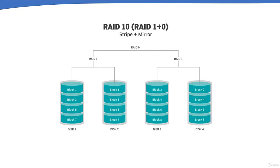RAID 10 combines the advantages of RAID 0 and RAID 1 in one system. Using RAID 0, data blocks are first striped over each set of drives, and the same blocks are mirrored using RAID 1. If something goes wrong with one disk, rebuild time is very fast — it just requires copying data from the surviving mirror to a new drive, which can take as little as 30 minutes for 1TB drives.